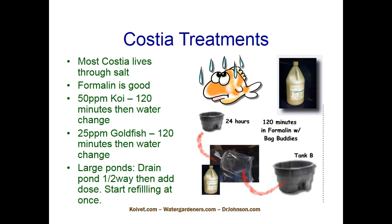In ponds and fish tanks, if you want to get ahead of Costia, that's going to be Mardel Clout and formalin/malachite green. Other treatments — potassium permanganate, chloramine-T, and copper — all tend to work on Costia. I don't like copper in fresh water because it can be unstable and result in copper toxicity. Seachem makes a chelated/aminated copper called Cupramine. The protein-aminated component comes off at a very predictable rate and leaks copper ions into the system, which clears the parasite effectively. I like Cupramine, but there are other ways.